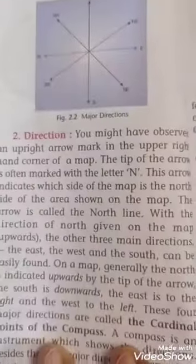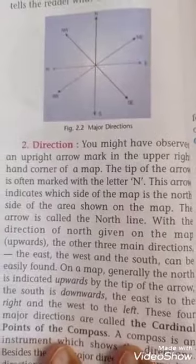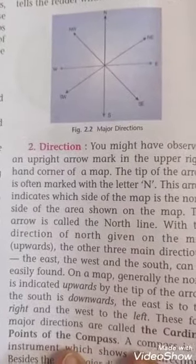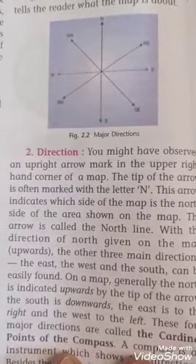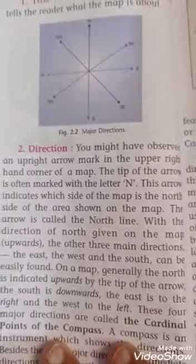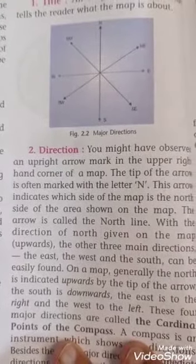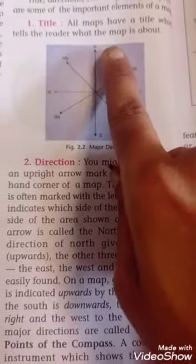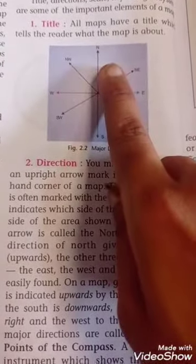The detail of the direction is you might have observed an upright arrow mark in the upper right hand corner of a map. The tip of the arrow is often marked with the letter N. Tip means at the top. N written means it indicates the direction of north.